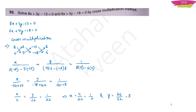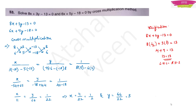Once you solve for x and y, x equals 11/22, which is 1/2. Similarly, y equals 66/22, which is 3. For verification, substitute x = 1/2 and y = 3 into the easiest equation. You get 13 = 13, meaning left-hand side equals right-hand side. So this is the correct answer.